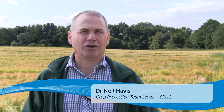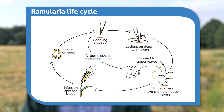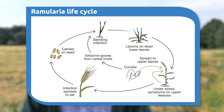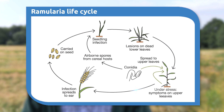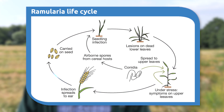My name's Neil Havis and we're here today to talk about and look at scoring Ramularia leaf spot in barley crops. Ramularia leaf spot is caused by a fungus, Ramularia colosigni, a fungus that's becoming more and more widespread not just within the UK but also across Europe and even further afield in other countries around the globe.